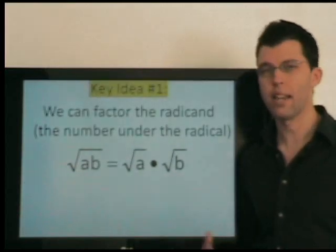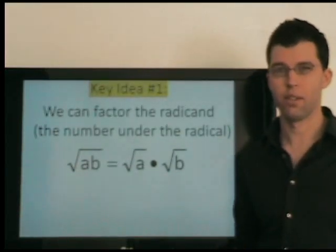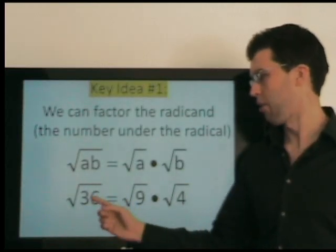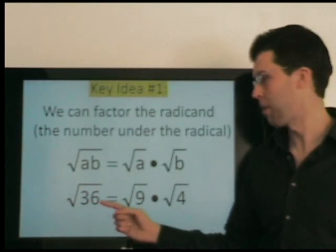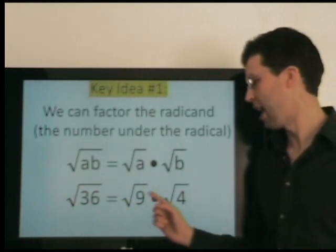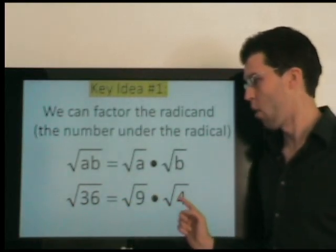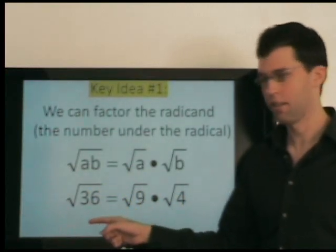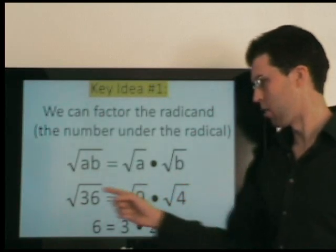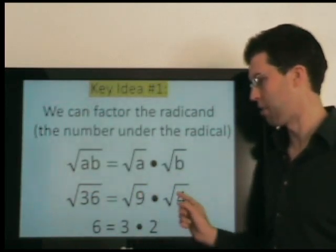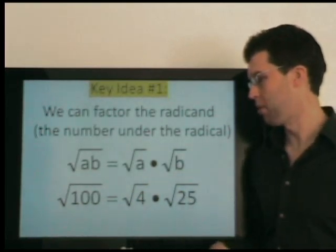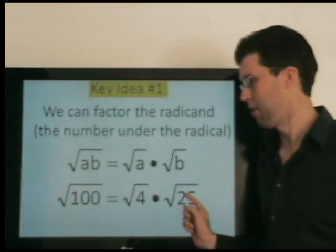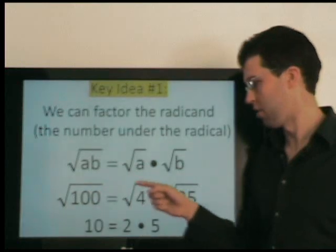The first key idea is that we can factor radicals. For example, radical 36 can be factored as radical 9 times radical 4. We can confirm: radical 36 is 6, radical 9 is 3, radical 4 is 2, and 6 equals 3 times 2. Another example: radical 100 can be factored as radical 4 times radical 25 — this is 10, this is 2, this is 5.